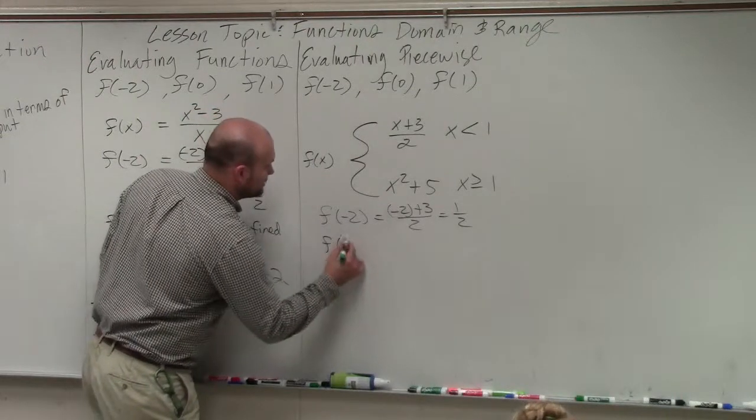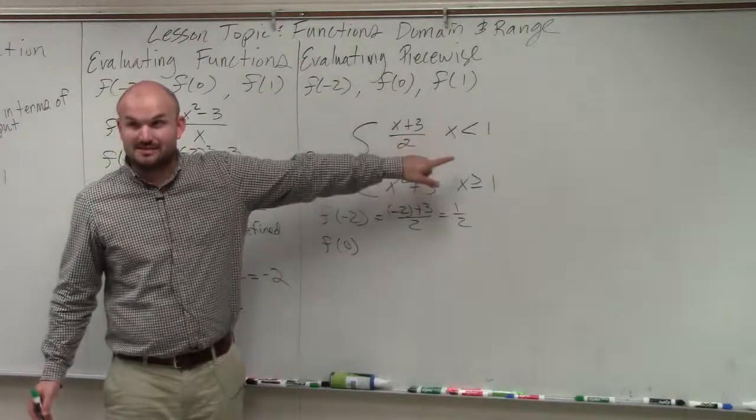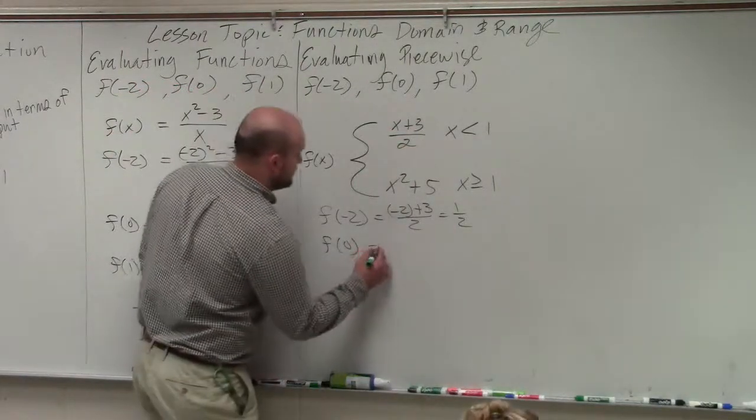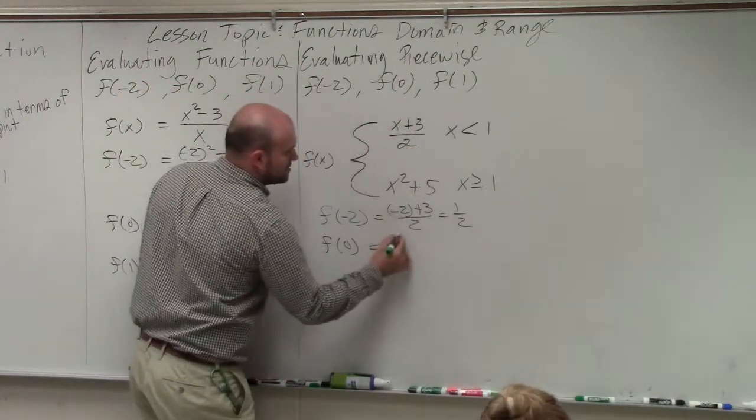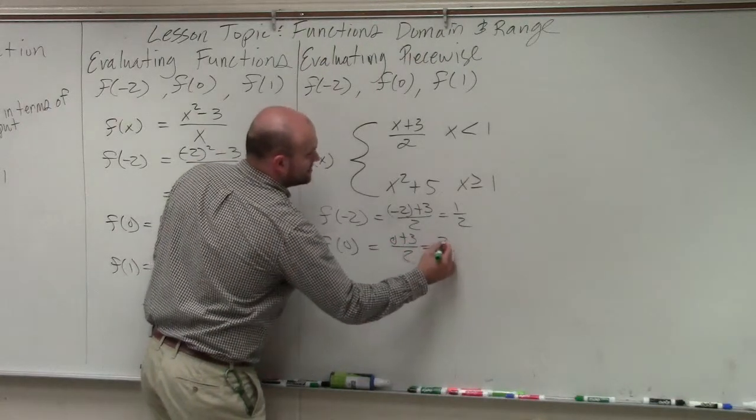If I do f of 0, f of 0 is, again, less than 1. So we plug it in for this rule. 0 plus 3 divided by 2 equals 3 halves.